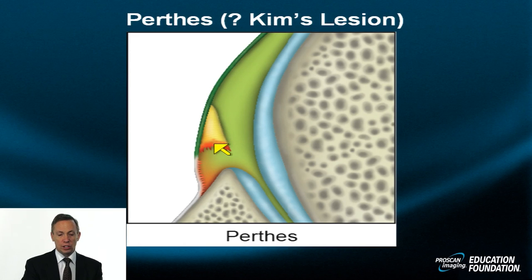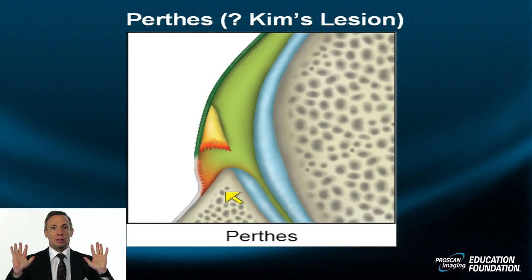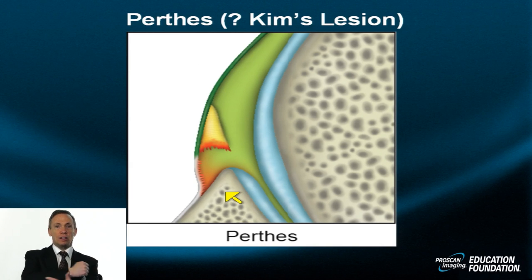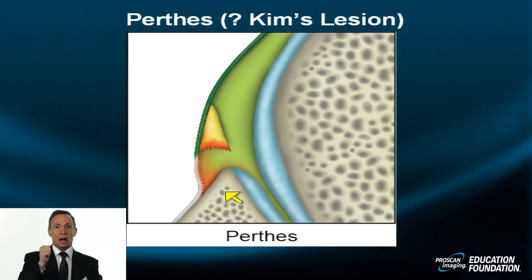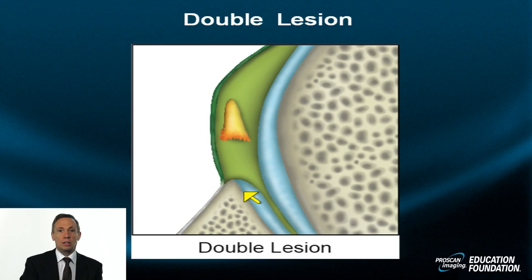If this lesion occurs in the back of the shoulder — as it often does in people doing bench pressing, military pressing, and contact athletes who have the front of their arm struck anteriorly, driving the humeral head backwards — they'll develop the reverse Perthes lesion, also known as Kim's lesion.